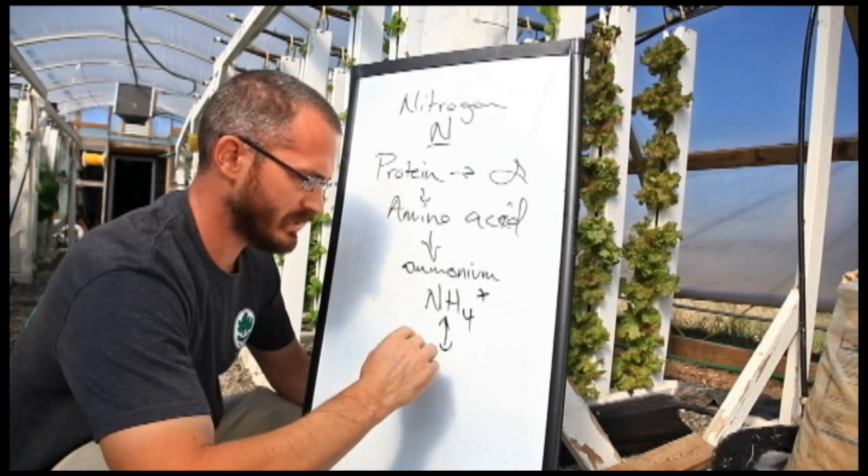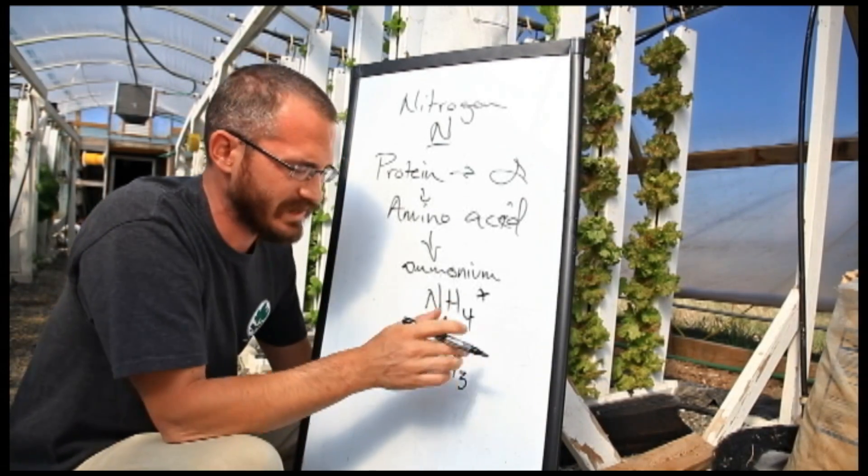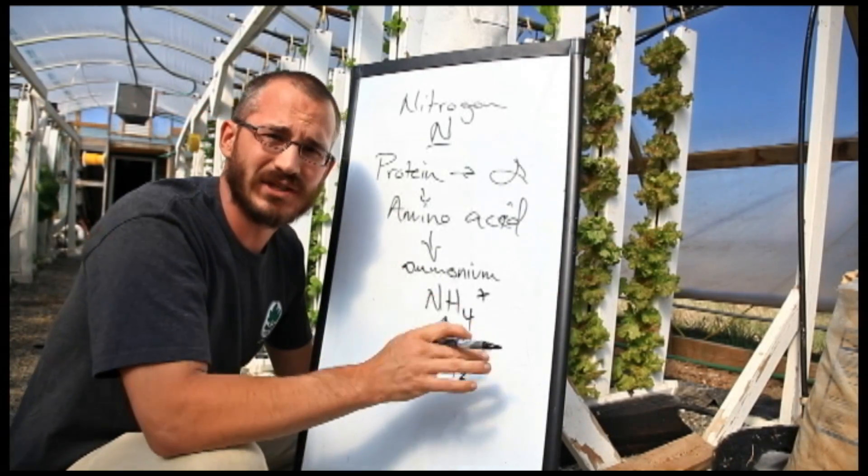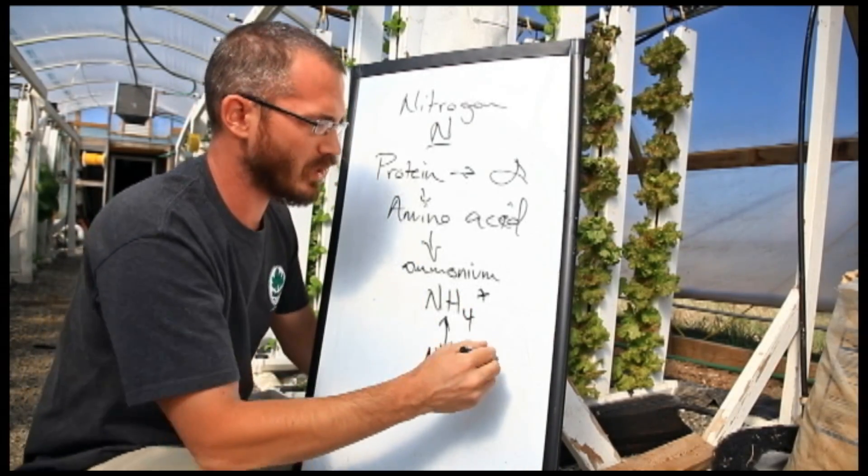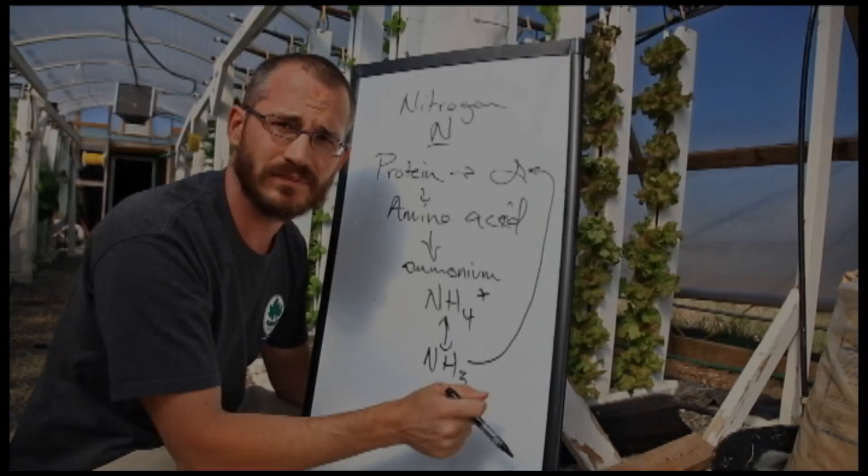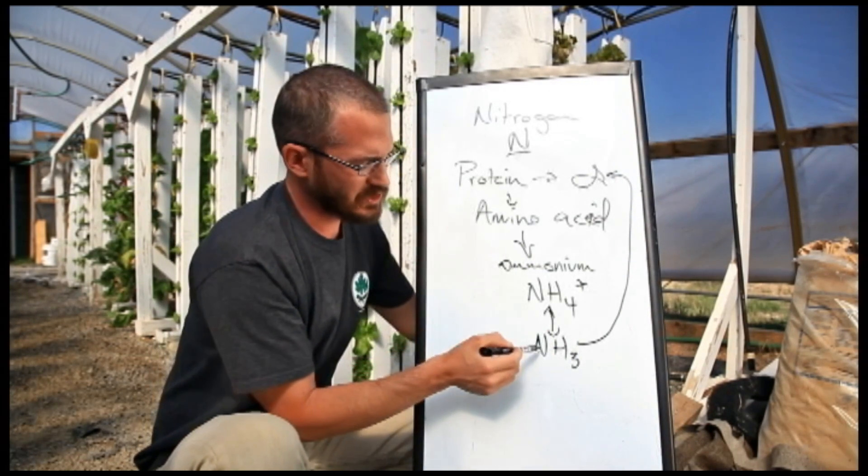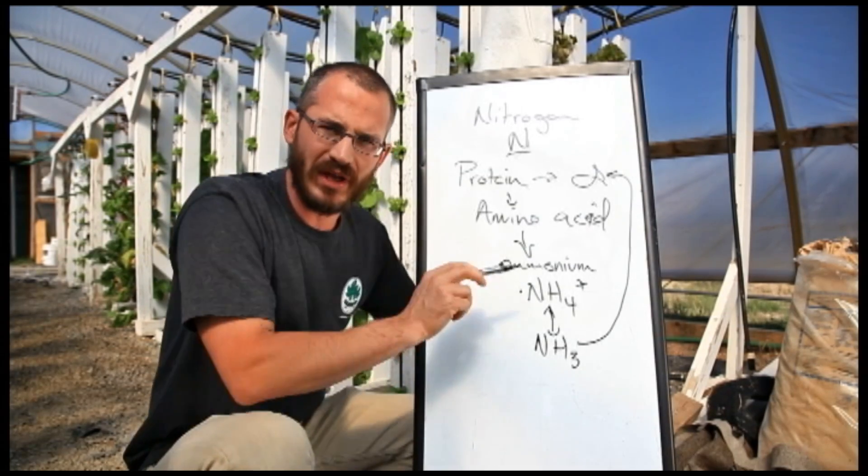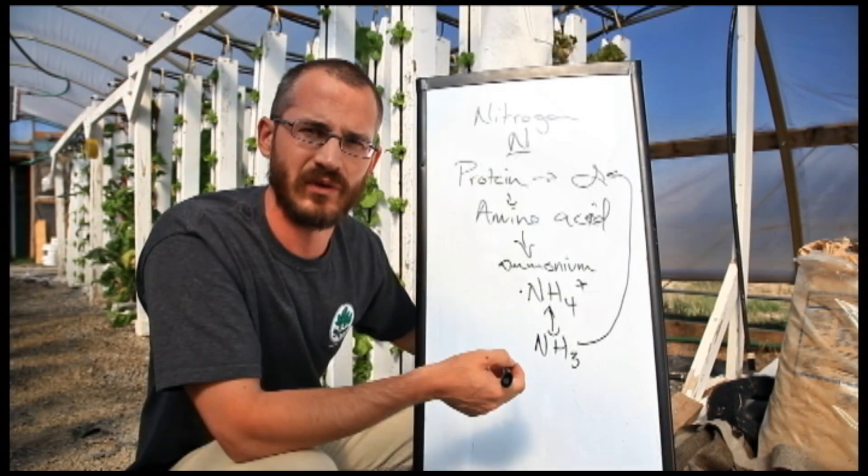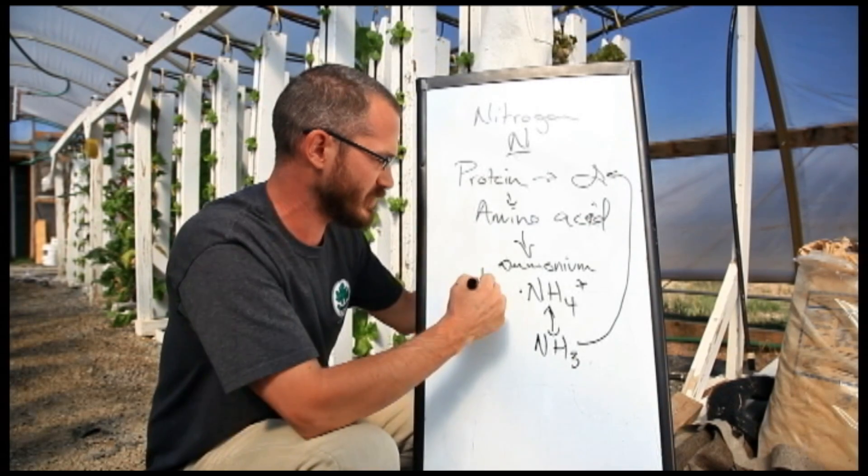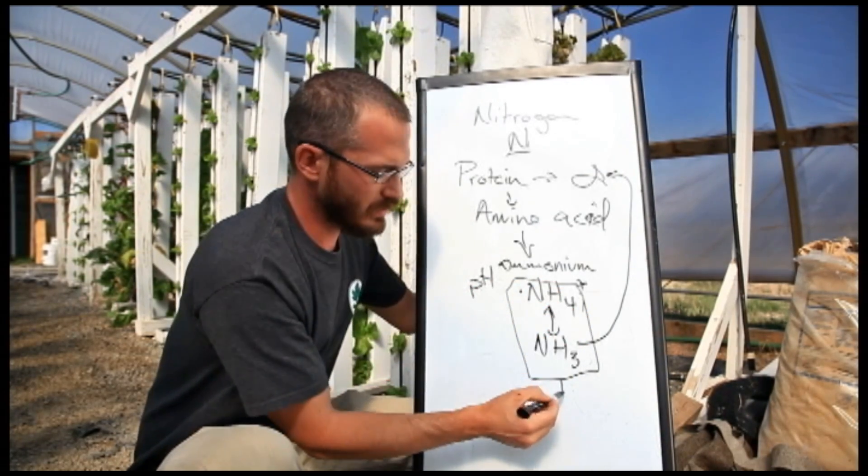It switches back and forth in solution between ammonium and ammonia, which is NH3. Ammonia doesn't have a charge, which is a bad thing. It means this ammonia can seep right back into our fish because the fish can't keep it out of the body. As it builds up in the water, this ammonia can poison our fish. Switching your system pH so that it favors ammonium can help, as ammonium is much less toxic to fish. However, pH is one solution but not the best.